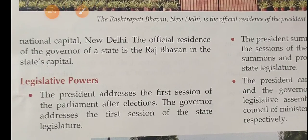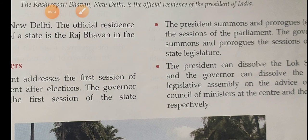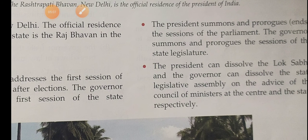The legislative powers of the President and Governor: the President addresses the first session of Parliament after election; the Governor addresses the first session of the State Legislature. The President summons or ends the session of Parliament; the Governor does so at the state level. The President can dissolve or dismiss the Lok Sabha, and the Governor can dissolve the State Legislative Assembly. After the signature of the Governor or President, a bill becomes a law. When Parliament is not in session, the President can issue an ordinance.